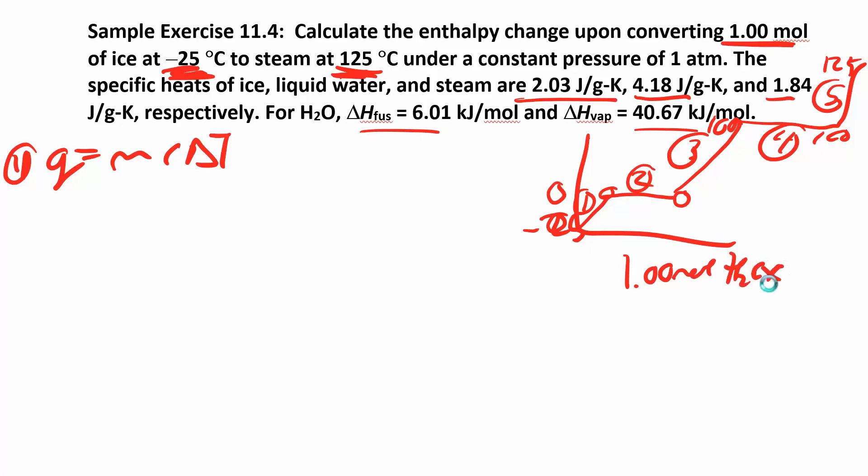My mass is going to be 18.02 grams. My specific heat is 2.03 joules per gram K. And my delta T is final 0 minus negative 25, which gives me 25.